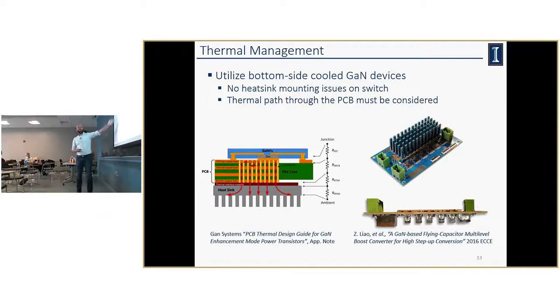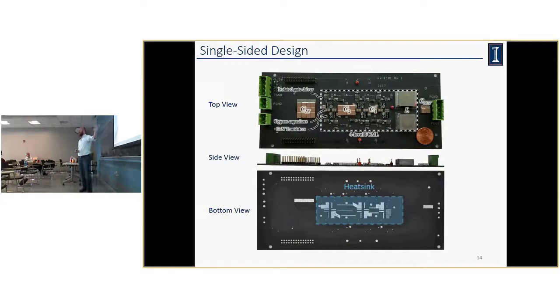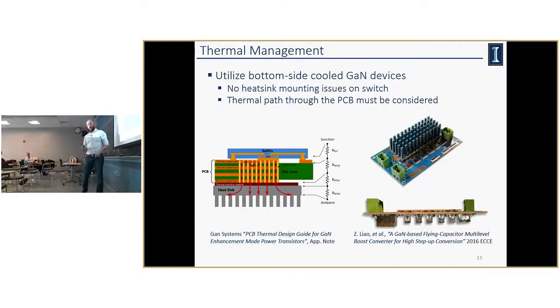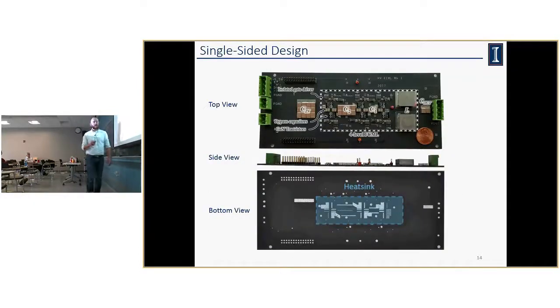So when we look at the single-sided design, it's literally everything is on the top side. If we go back one slide, in this case, all of these are the flying capacitors on the bottom side along with the inductance. Now we have everything on the top side. Input-output capacitors, flying capacitors, and the inductors are all on the top side. Nothing on the bottom side, and we have a nice flat surface to mount our heat sink.